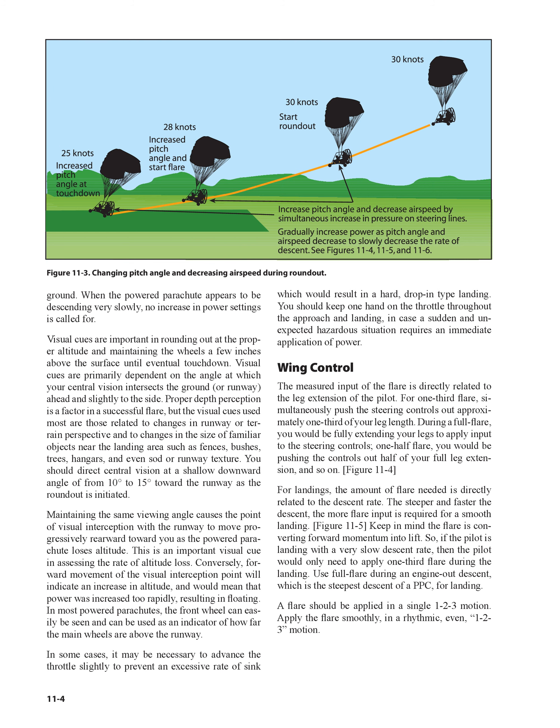Wing control: The measured input of the flare is directly related to the leg extension of the pilot. For a one-third flare, simultaneously push the steering controls out approximately one-third of your leg length. During a full flare, you would be fully extending your legs to apply input to the steering controls. For a one-half flare, you would be pushing the controls out half of your full leg extension (Figure 11-4). For landings, the amount of flare needed is directly related to the descent rate — the steeper and faster the descent, the more flare input is required for a smooth landing (Figure 11-5). If the pilot is landing with a very slow descent rate, then only a one-third flare is needed during landing.